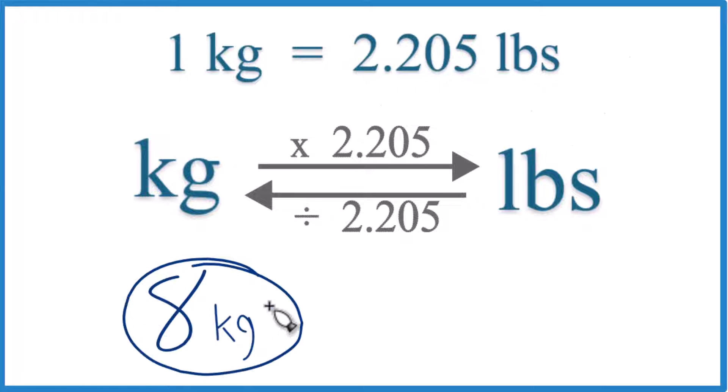If you have eight kilograms and you want to get that to pounds, here's how you do it. You need to know that one kilogram equals 2.205 pounds. We call this a conversion factor. We need it when we're going from kilograms to pounds or pounds to kilograms.